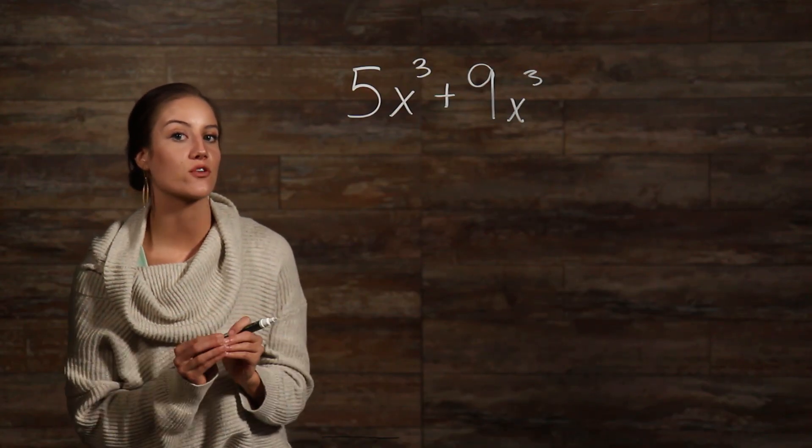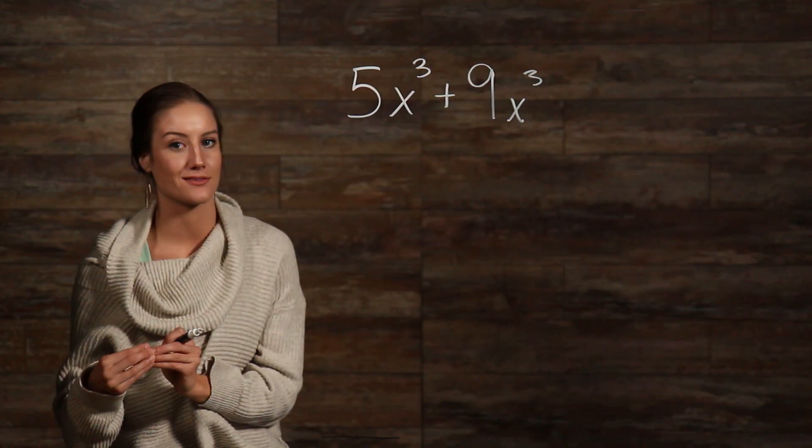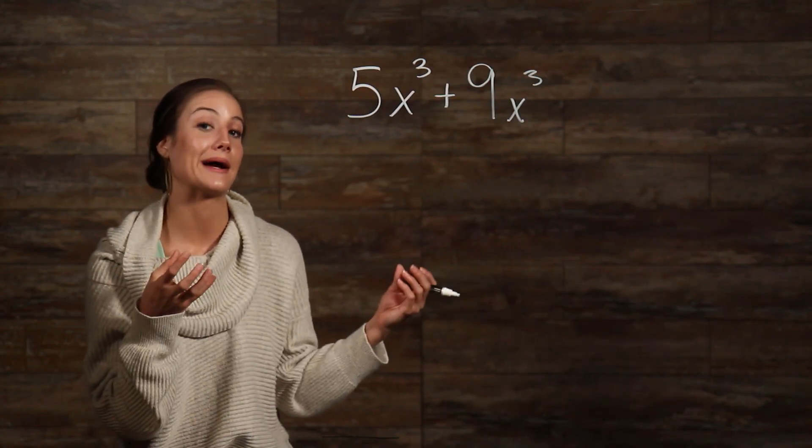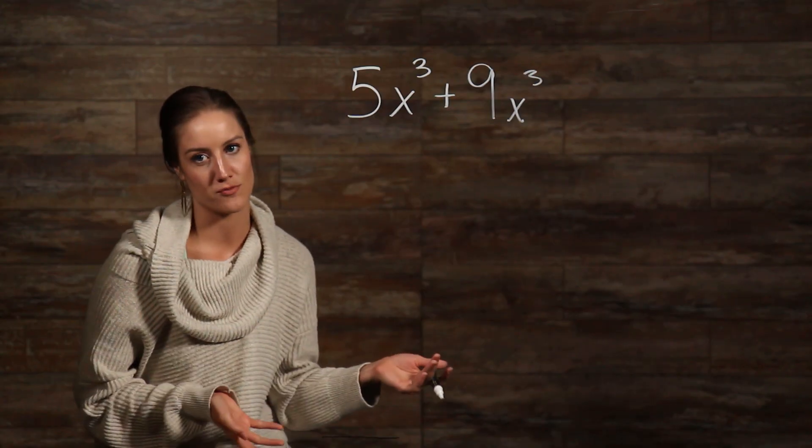Both things have to be true in order for us to add these two terms together. This same process of adding and subtracting with exponents is also called combining like terms, which may sound more familiar to you.